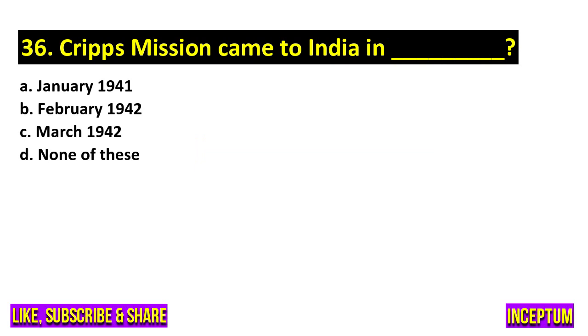Question number 36. Cripps Mission came to India in the year. In the options we have January 1941, February 1942, March 1942, none of the above. And the right answer of this question is option C, March 1942.